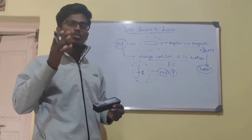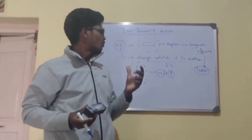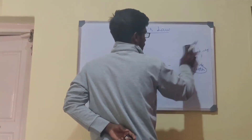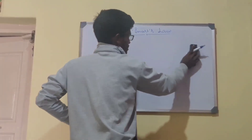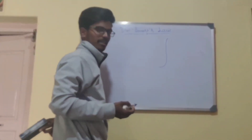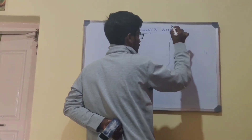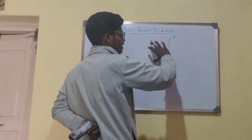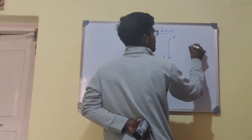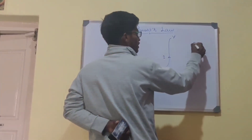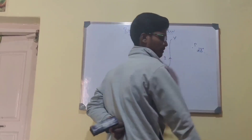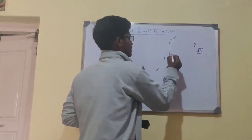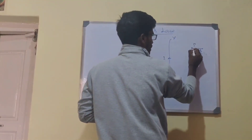Biot-Savart Law says that the magnetic field at some point will depend on certain quantities — which quantities and what is the relation between electricity and magnetic field, we will discuss under this law. Let me explain Biot-Savart Law by taking an example. Let me consider a straight conductor named XY. XY is a part of a conductor which carries current I. Whenever there is a current in the conductor, we will observe a magnetic field. Let P be a point where I have to find out the strength of the magnetic field because of the current in the conductor.